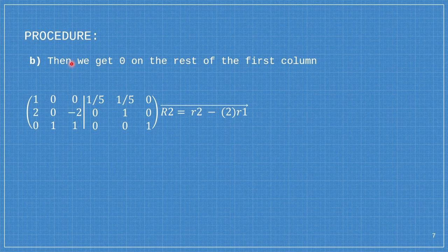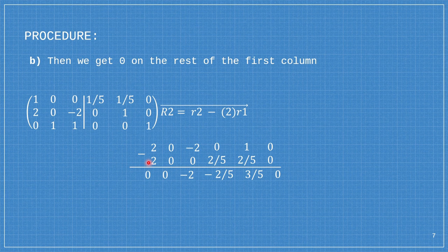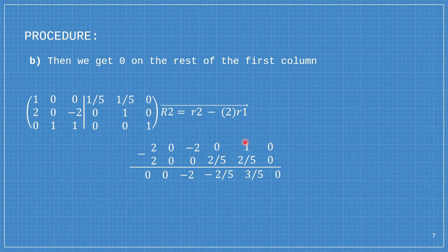After we obtain 1 here, the next step is to make the rest of the first column into 0. Since row 3 is already 0, I only have to make row 2 zero. Row 2 minus row 1 multiplied by 2: 2 minus 2 is 0, 0 minus 0 is 0, negative 2 minus 0 is negative 2, 0 minus 2 over 5 is negative 2 over 5, 1 minus 2 over 5 is 3 over 5, and 0 minus 0 is 0. We replace row 2 by this — so this is our new row 2.